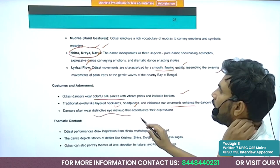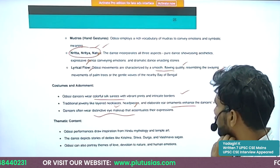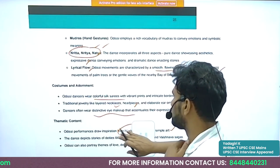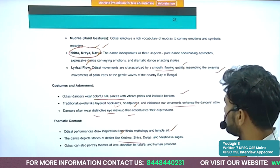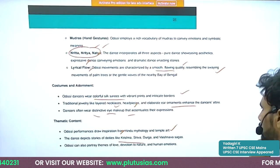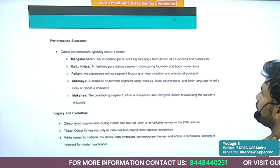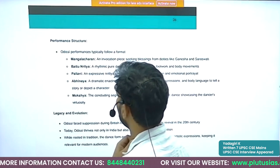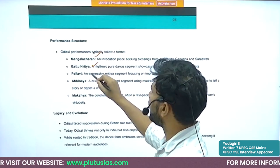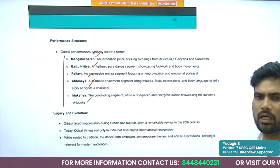Odissi's thematic content draws inspiration from Hindu mythology and temple art. The dance depicts deities like Krishna, Shiva, and Durga, as well as Vaishnava sages. Themes also include love, devotion to nature, and human emotions. The performance structure includes: Mangalacharan, Battu Nritya, Pallavi, Abhinaya, and Moksha — five structured steps.